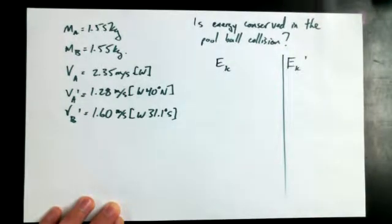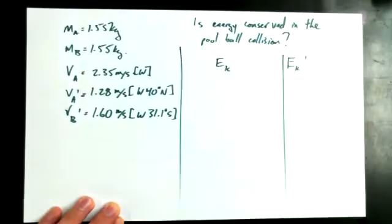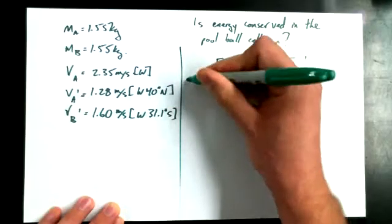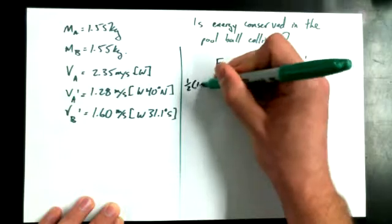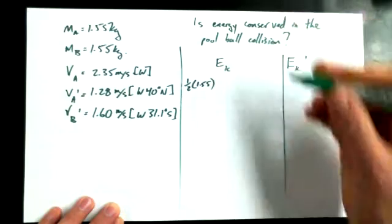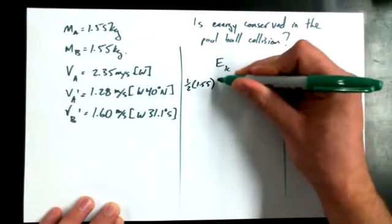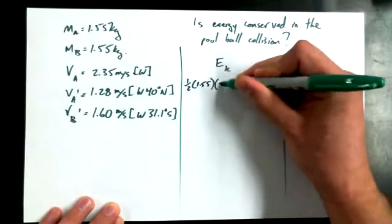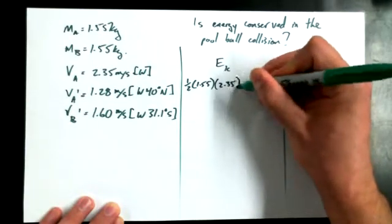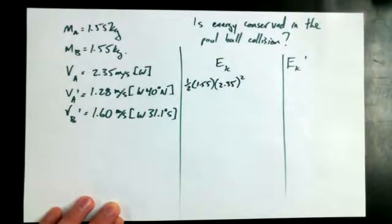So EK, and I'm just going to use numbers again, I'm going to drop the units because I do have some limited space here, although it's certainly more correct to include the units. One half times 1.55 times, so one half MV squared, VA is 2.35 squared. That's all the kinetic energy before the scenario, for the before scenario.